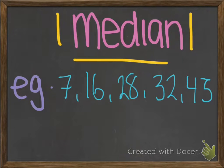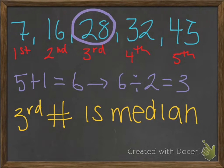Next will be the median. The median is the middle number once you put your data in order from least to greatest. First, you add the total amount of numbers in the data plus 1. We have 5 numbers in our data. 5 plus 1 equals 6.